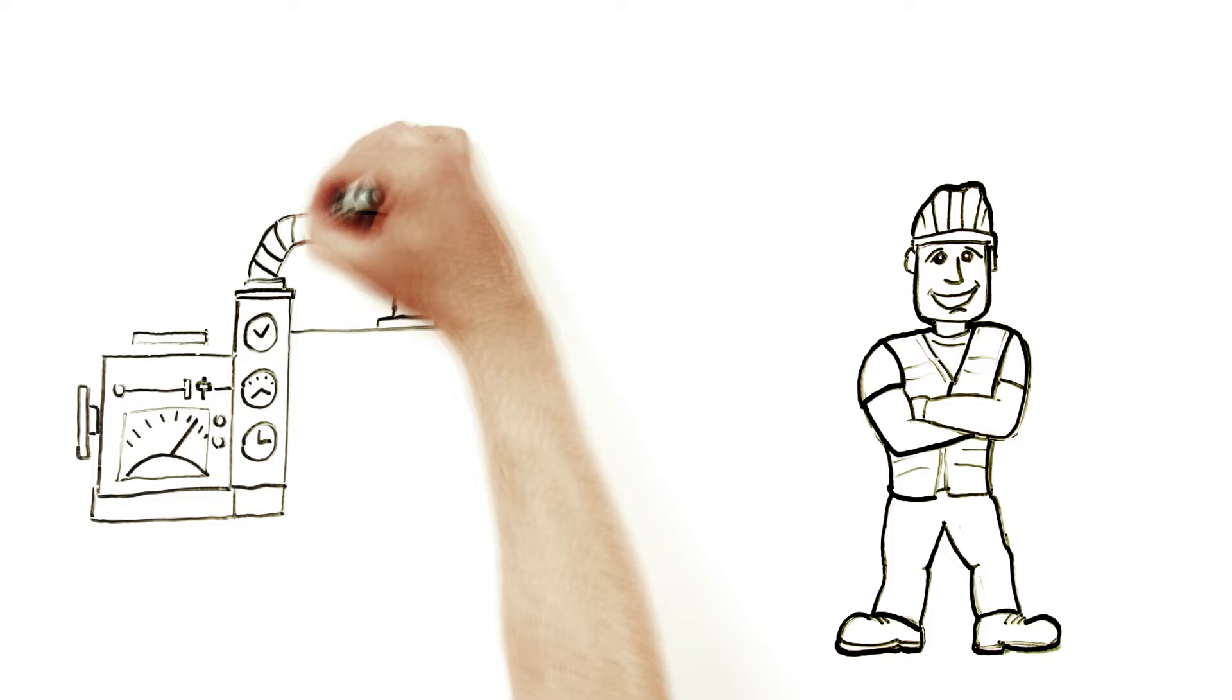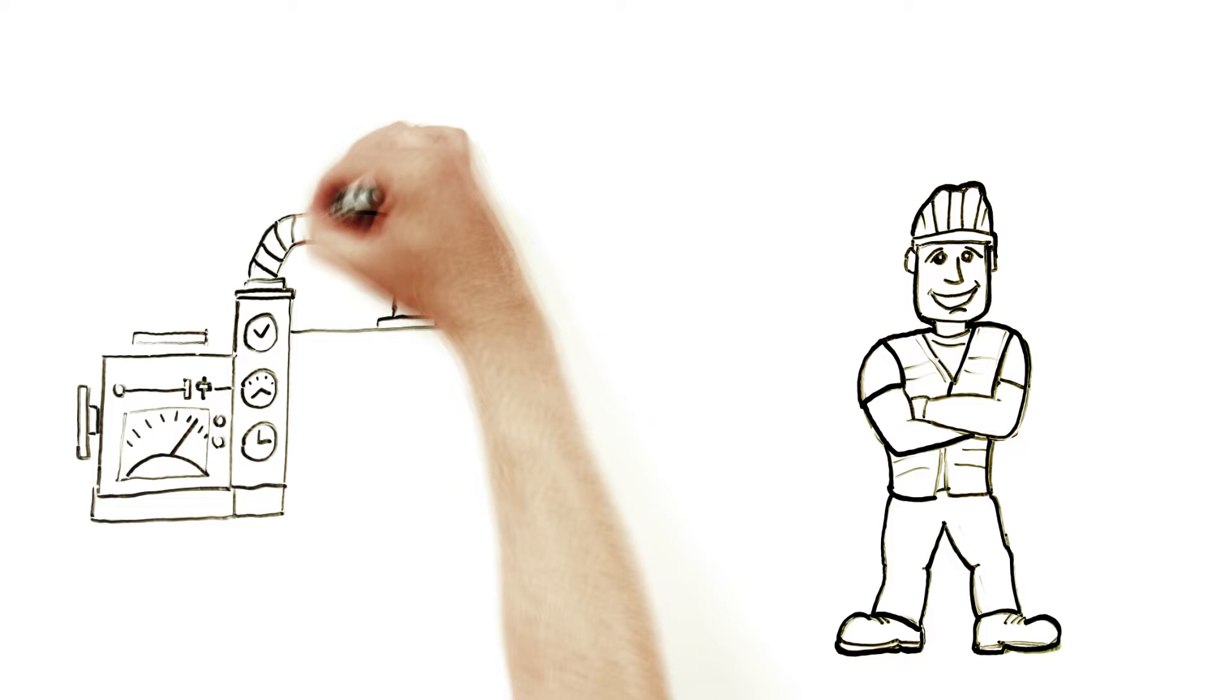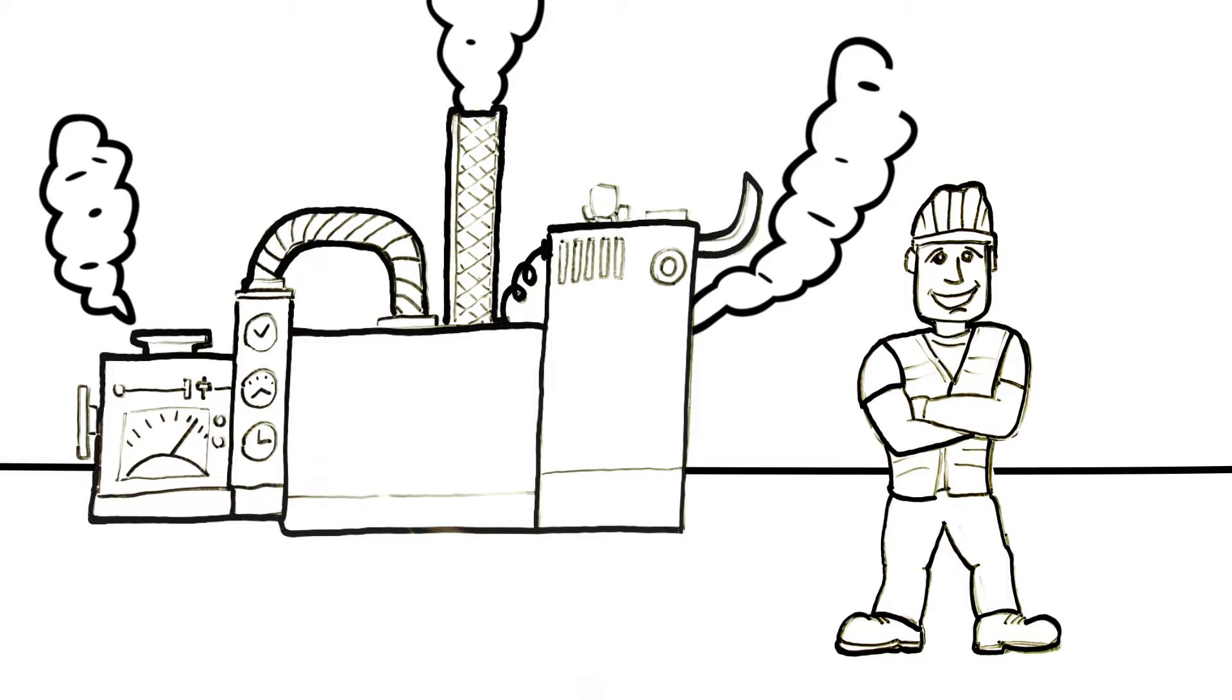When a critical piece of equipment broke down at Jack's plant, Jack knew it was up to him to get the equipment back up and running quickly, or he would face some very unhappy customers.